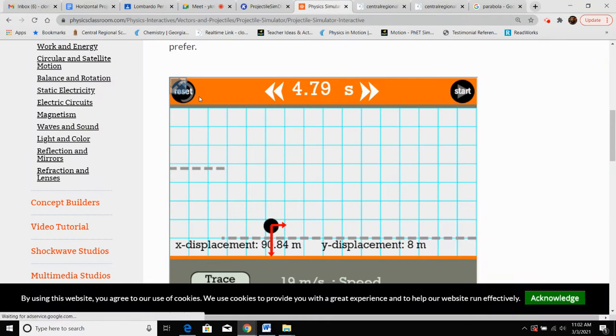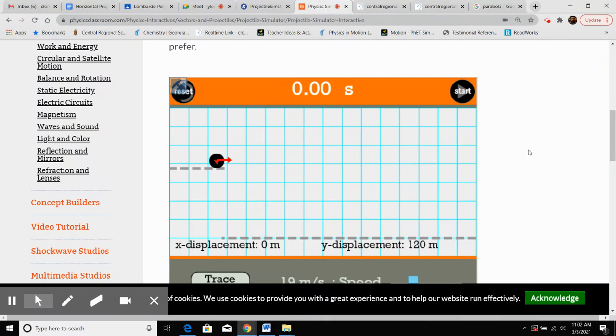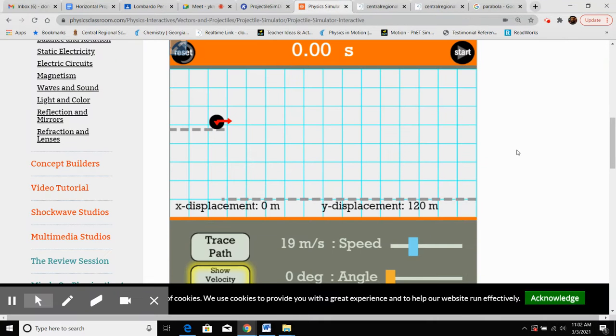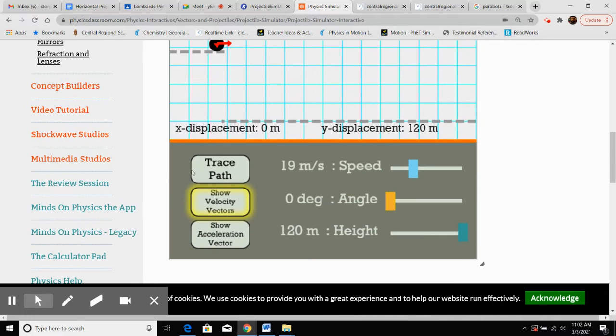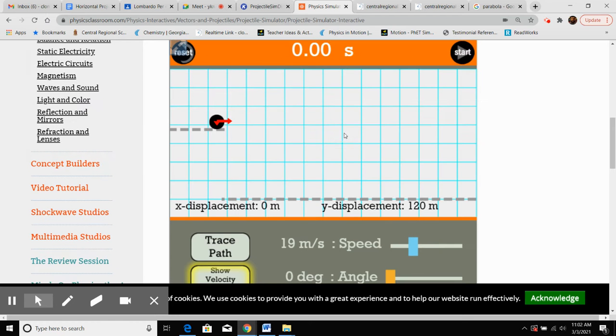So using our projectile motion simulator here, we're going to get a good idea of projectile motion and what effect there is on the y velocity, the horizontal velocity, or vertical velocity, acceleration, what angles have to deal with it, and horizontal speed, what are all these factors going to do.